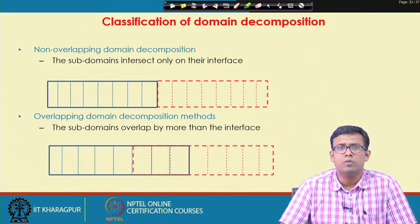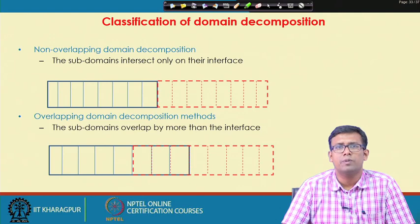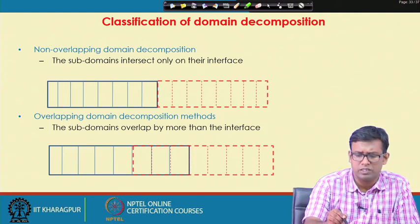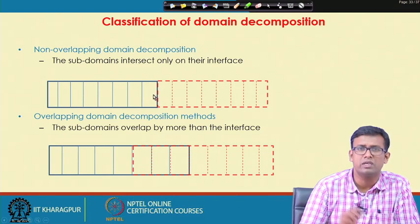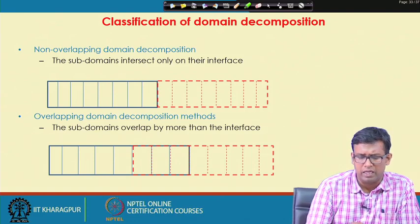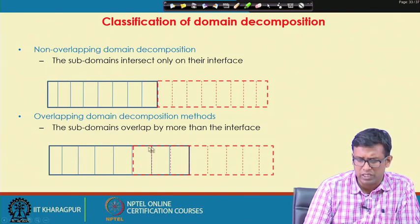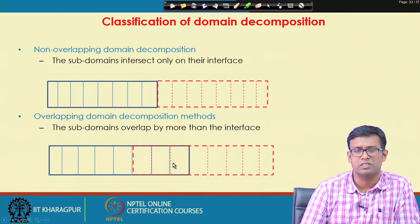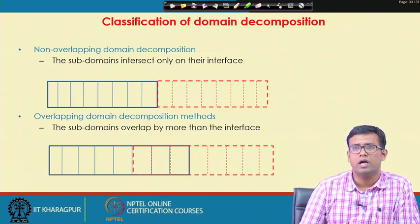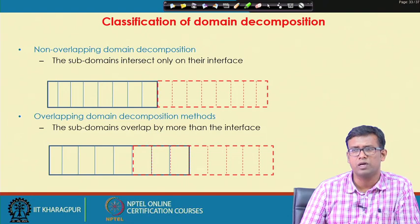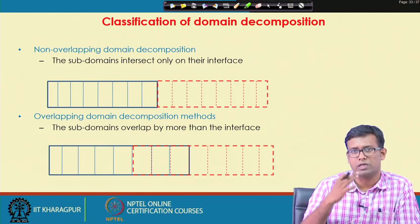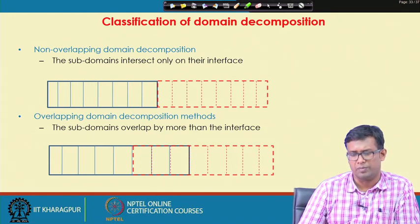There are two possibilities in domain decomposition. In non-overlapping domain decomposition, subdomains intersect only at their interface, giving a single interface between subdomains. In overlapping domain decomposition, one subdomain has a certain overlap with another, giving two interfaces. These correspond to overlapping and non-overlapping block solution vectors, which were handled by the matrix W in the block relaxation scheme.